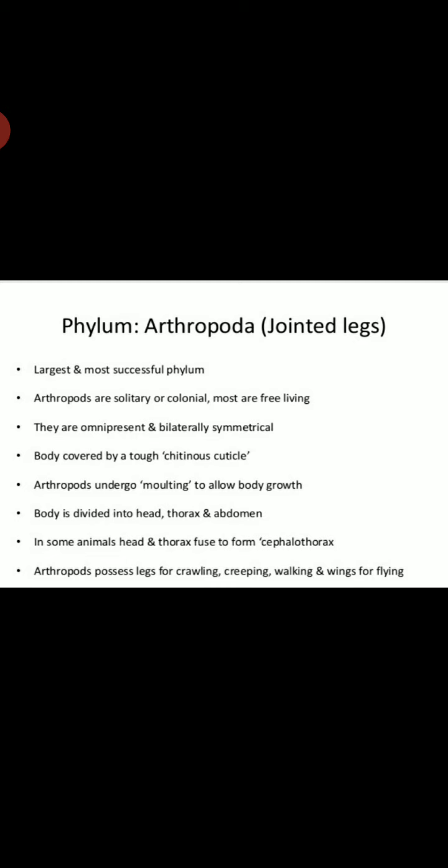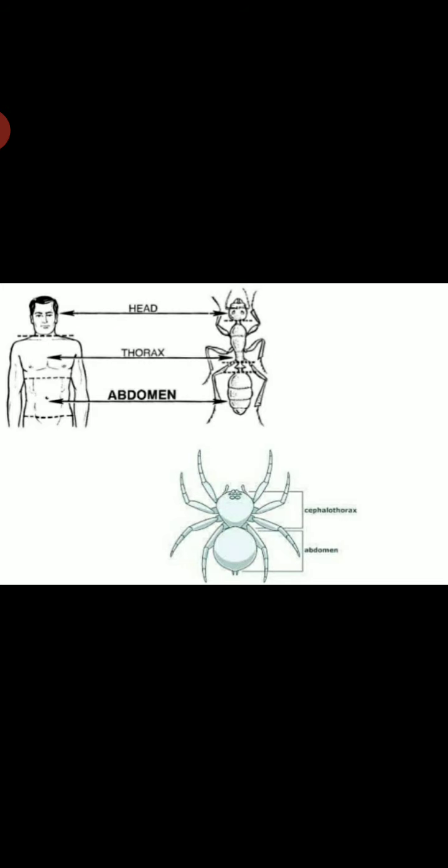Body divided into head, thorax and abdomen. In some animals, head and thorax fuse to form cephalothorax. Arthropods possess legs for crawling, creeping, walking and wings for flight. Here is the division of their body: head, thorax and abdomen.